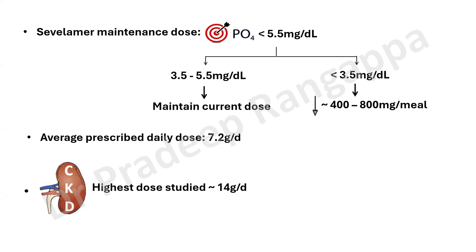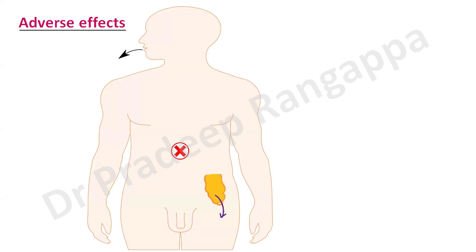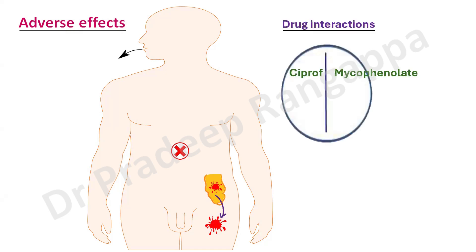Regarding adverse effects: since Sevelamer is a phosphate binder acting within the gut, most disturbances are gastrointestinal — nausea, vomiting, abdominal pain, diarrhea, and melena have been reported. For intensivists, this is relevant because CKD patients in the ICU can have GI bleeds, and Sevelamer can perpetuate GI bleeds or melena. Drug interactions include ciprofloxacin, mycophenolate (especially relevant in post-transplant patients with CKD), thyroxine, anticonvulsants, and anti-arrhythmic drugs.